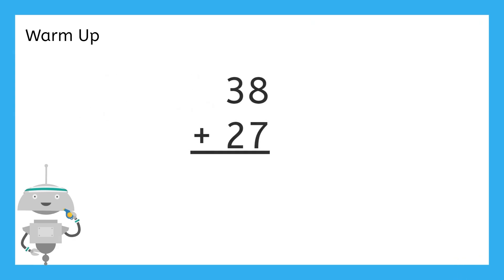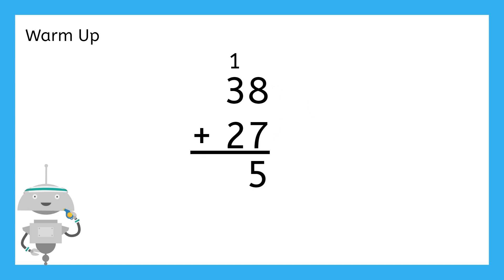For the problem 38 plus 27: 8 plus 7 equals 15 ones. In addition, we regroup when the sum of a single place value is more than one digit. So since 10 ones make a 10, 15 ones should be regrouped as one 10 and five ones. Then the one 10 we regrouped, plus 3 plus 2, equals 6, for a sum of 65.